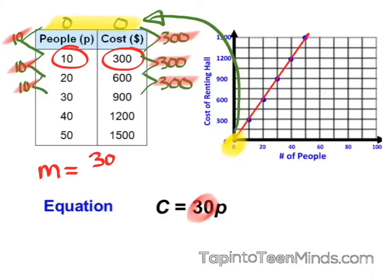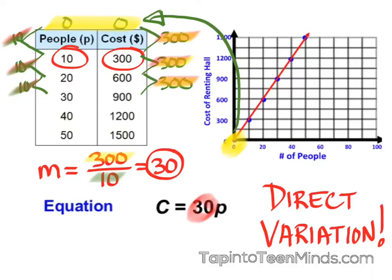So in this case, we can take 300, divide by 10, and we get our 30. So once again, just to highlight that so that we're clear, our 300 comes from our first differences, and our number 10 comes from the value that our independent variable is increasing by. This is, in fact, a direct variation.